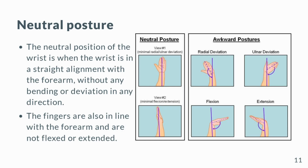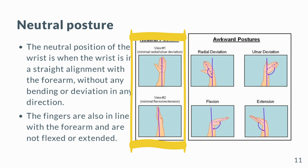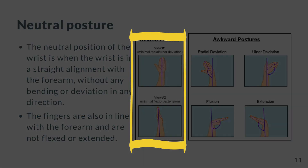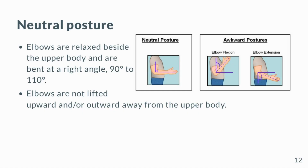The neutral position of the wrist is when the wrist is in a straight alignment with the forearm, without any bending or deviation in any direction. The fingers are also in line with the forearm and are not flexed or extended. Elbows are relaxed beside the upper body and are bent at a right angle, 90 to 110 degrees. Elbows are not lifted upward or outward away from the upper body.